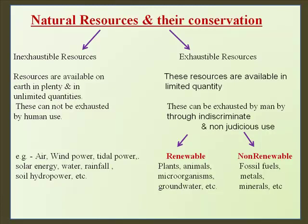Natural resources are of two types. Inexhaustible resources are those available on earth in plenty and in unlimited quantities. They cannot be exhausted by human use. Examples include air, wind power, tidal power, solar energy, water, rainfall, soil, and hydropower.